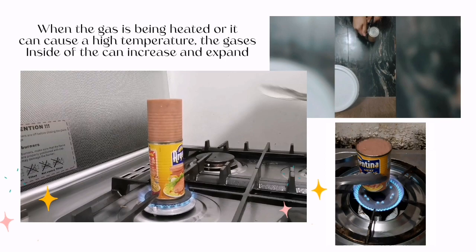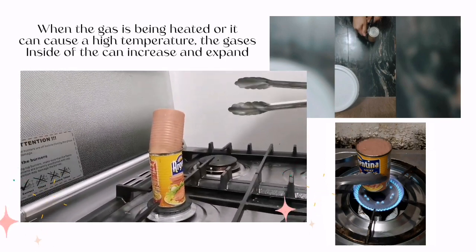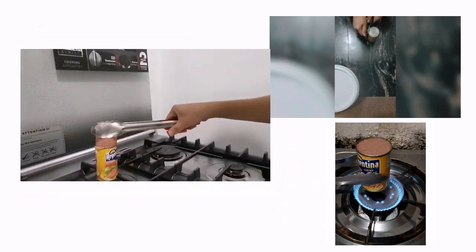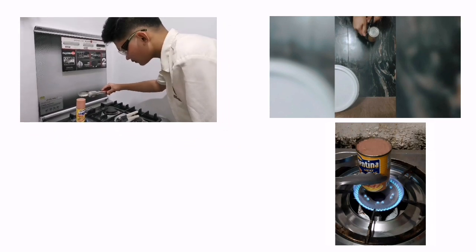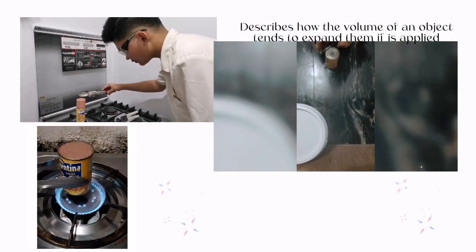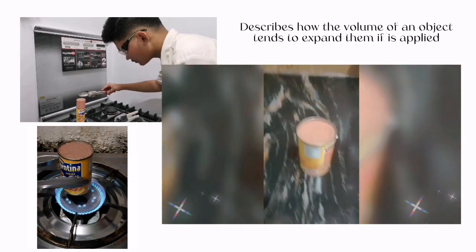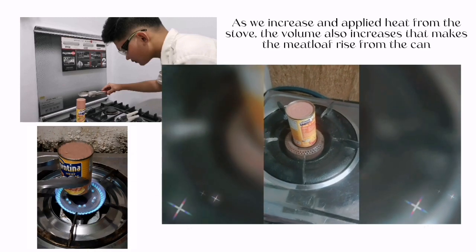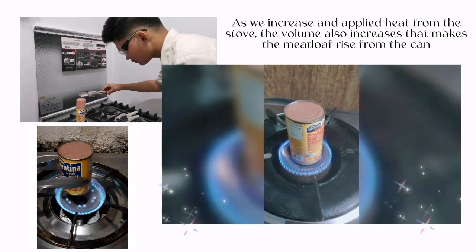Because when the gas is heated to a high temperature, the gases inside the can will increase and expand. That is why the meat loaf showed up and separated from where it came from. This describes how the volume of an object tends to expand when heat is applied. As we increase and apply heat from the stove, the volume also increases, making the meatloaf rise from the can.